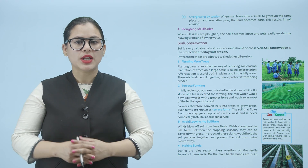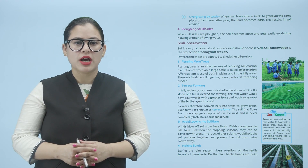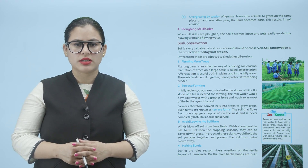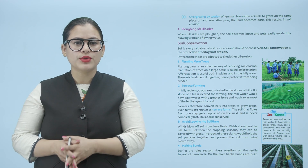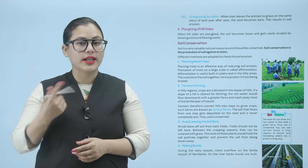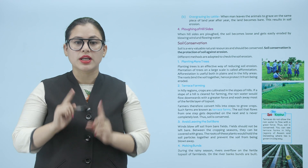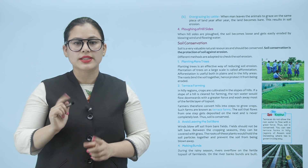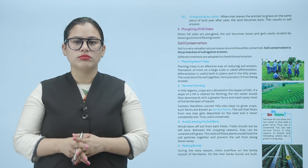Terrace farming: on hill slopes, steps are cut to grow crops. Such farms are known as terrace farms. The soil that flows from one step gets deposited on the next and is never completely lost. Thus soil is conserved. Hill areas mein jo slopes hain, unhe terrace farming ke liye use kiya jaata hai.